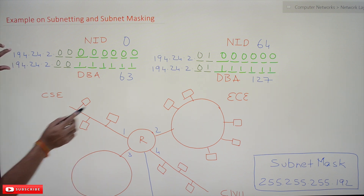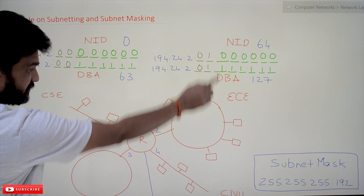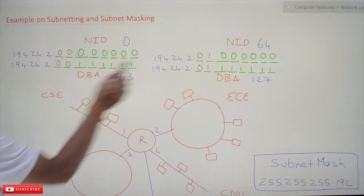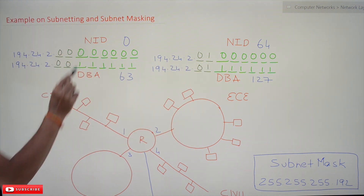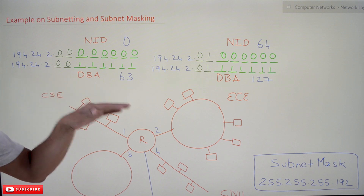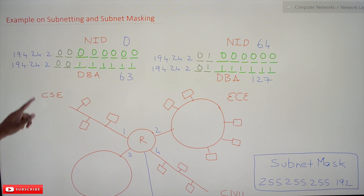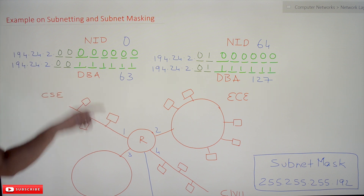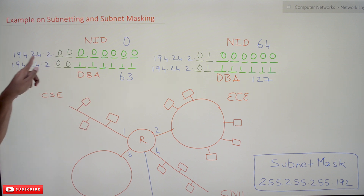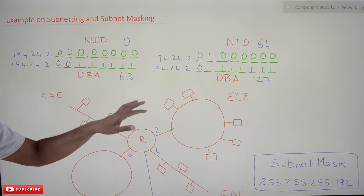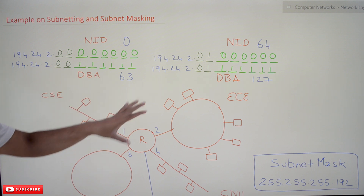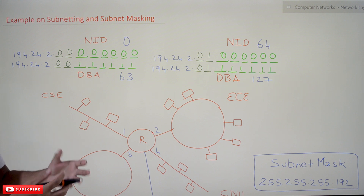For each subnet, the first address is going to be the network ID. So for this subnetwork, this is our network ID, and this is our directed broadcast address. All these concepts were discussed previously, and for better understanding we are revisiting them.